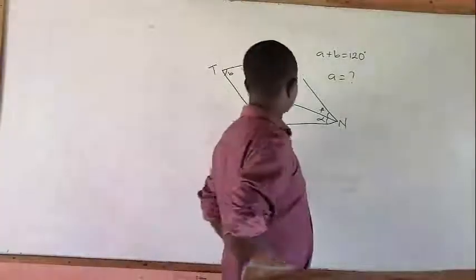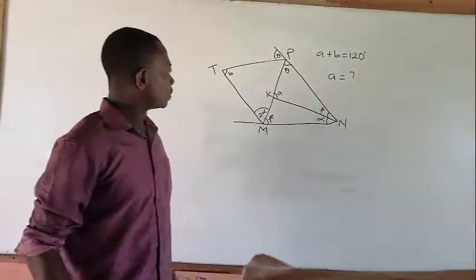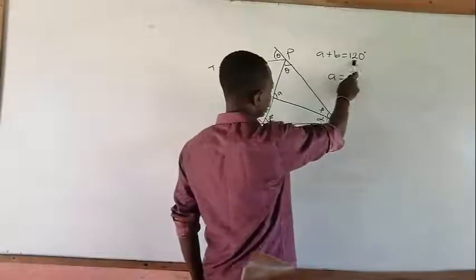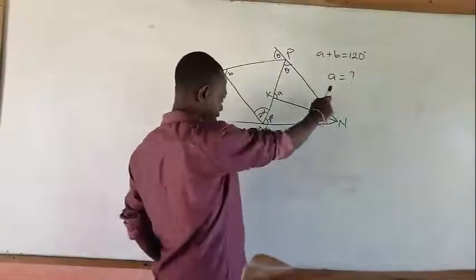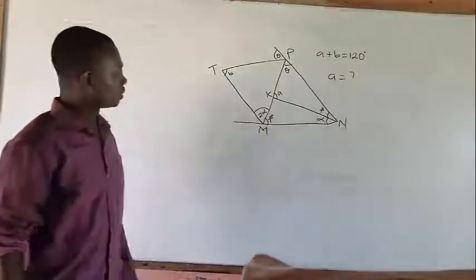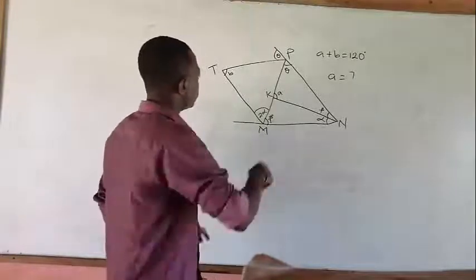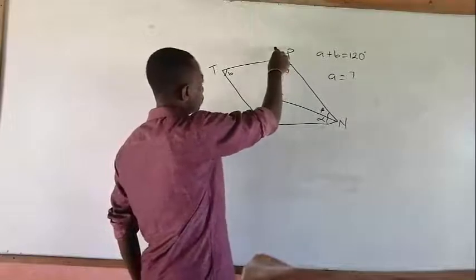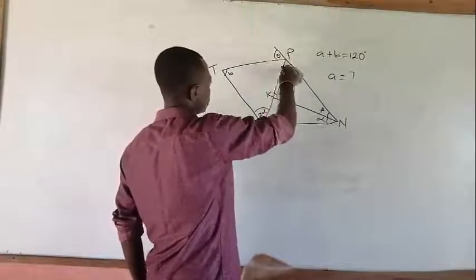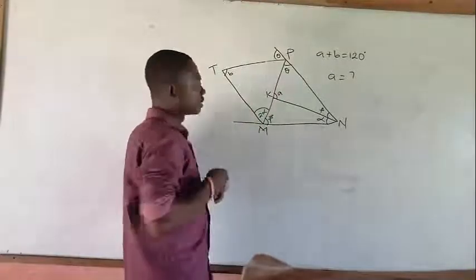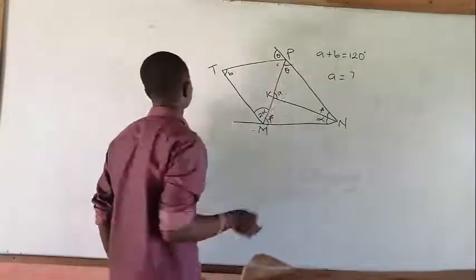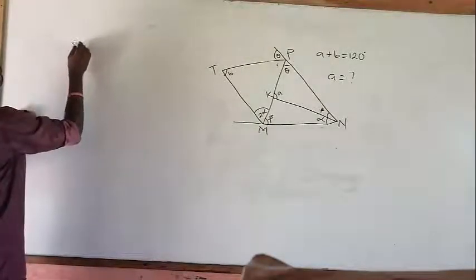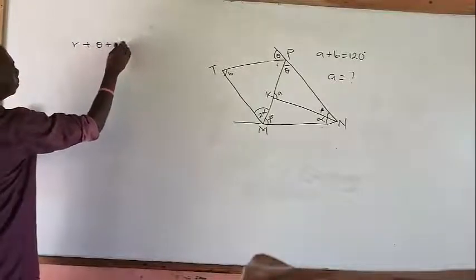My name is Teddy and I am the instructor, so we are going to solve this problem right now. A plus B equals one point — find angle A. Now we have theta here. We know this angle is along a thick line from this side, and this side is also along a thick line. So let's assume this side is R.